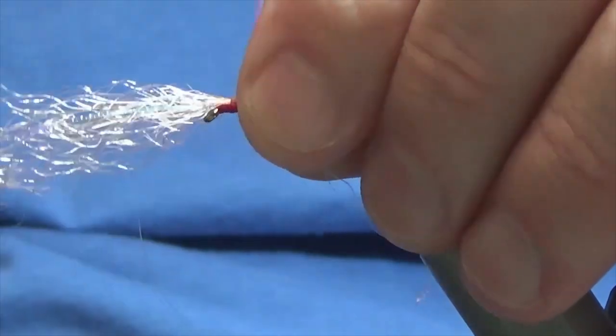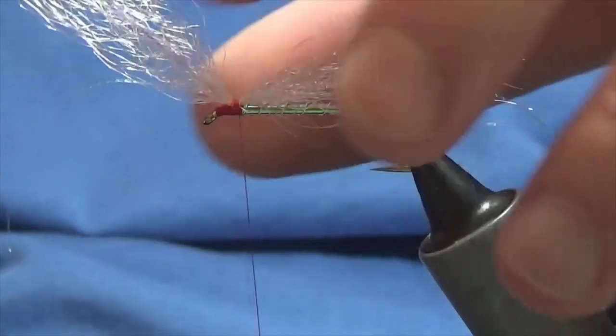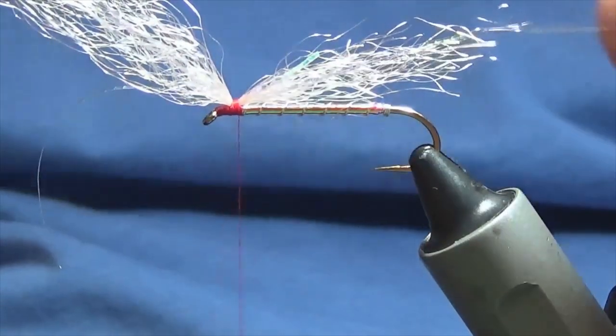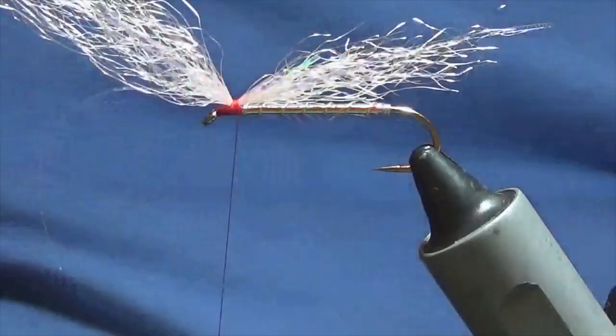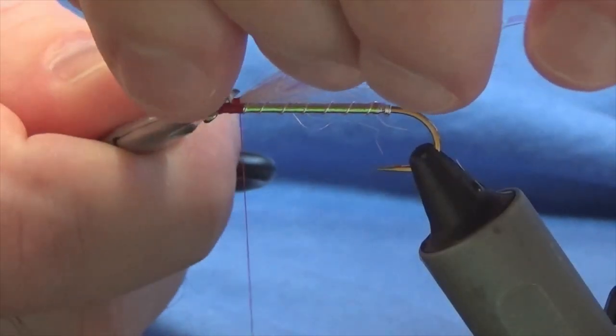Then I'm just going to come around with the pinch loop, nice tight turns. Because this is real stiff fiber that you're dealing with here. Come in with a nice pair of sharp scissors, trim away the excess.